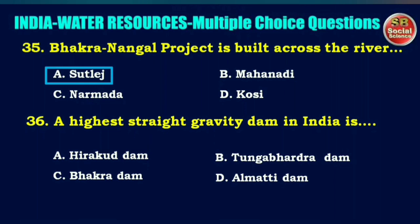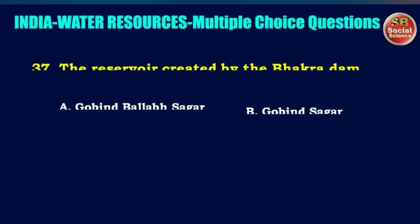The highest straight gravity dam in India is — options are Hirakud Dam, Tungabhadra Dam, Bhakra Dam, or Almatti Dam. The right answer is option C: Bhakra Dam.